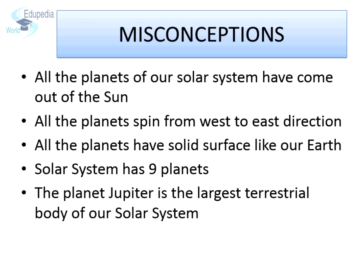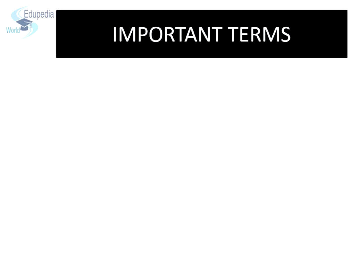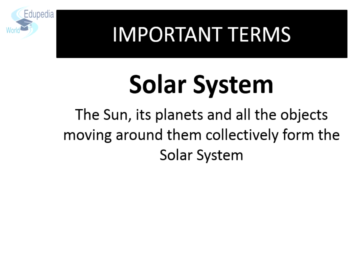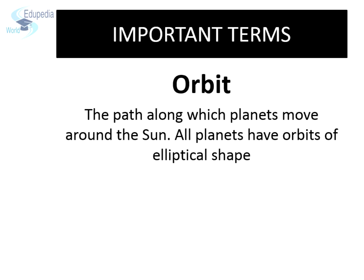Let us get familiar with some important terms. The Sun, its planets, and all the objects moving around them collectively form the solar system. Orbit is the path along which planets move around the Sun. All planets have orbits of elliptical shape.